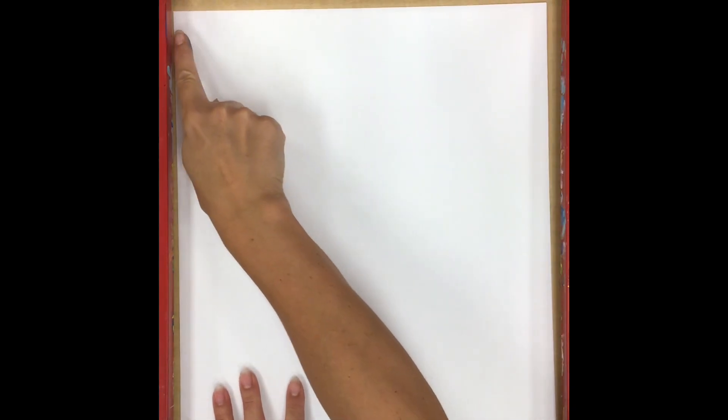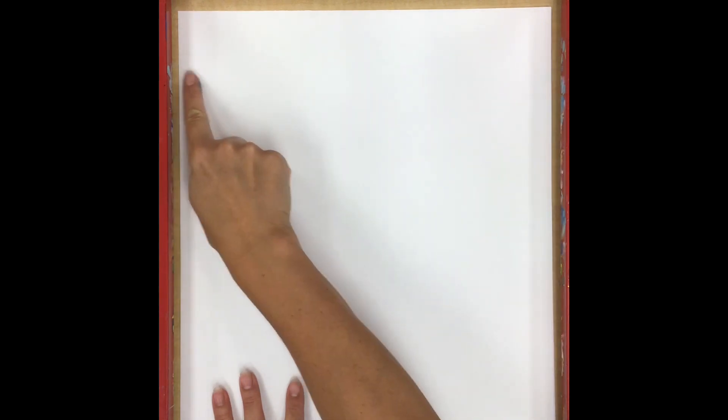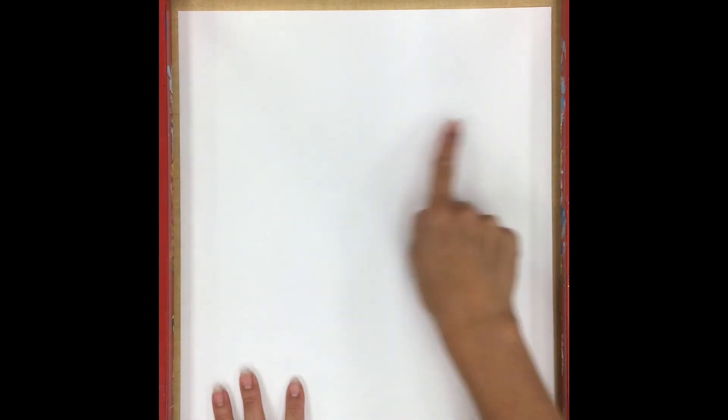Now we are going to be making a line design on this paper, starting at the top and making some horizontal lines that go all the way across our page. So horizontal means we're going side to side.